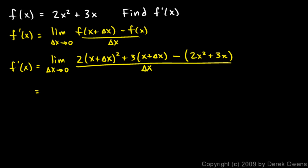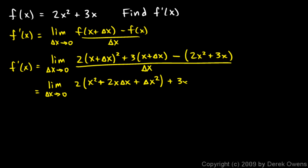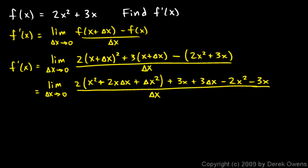Let's simplify. This is the limit as delta x approaches 0. We have 2 times (x + delta x)², which expands to x² + 2x·delta x + (delta x)² — note that (delta x)² means the entire quantity delta x, squared. That came from multiplying (x + delta x)(x + delta x). Now distributing the 3 gives plus 3x + 3·delta x. Then we distribute the negative sign to get minus 2x² minus 3x, all over delta x.